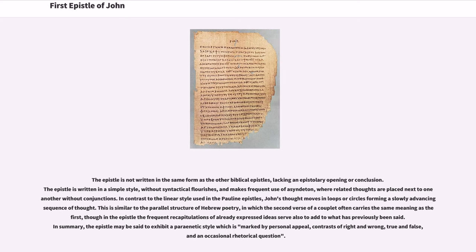The epistle is not written in the same form as the other biblical epistles, lacking an epistolary opening or conclusion. It is written in a simple style, without syntactical flourishes, and makes frequent use of asyndeton, where related thoughts are placed next to one another without conjunctions. In contrast to the linear style used in the Pauline epistles, John's thought moves in loops or circles forming a slowly advancing sequence of thought.